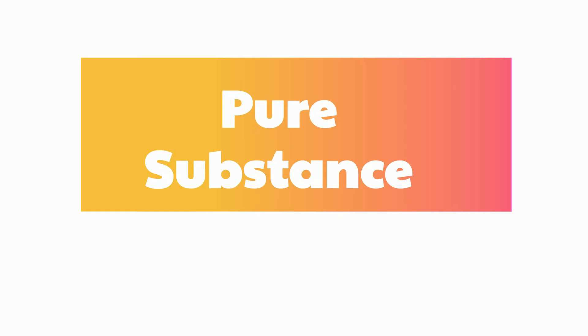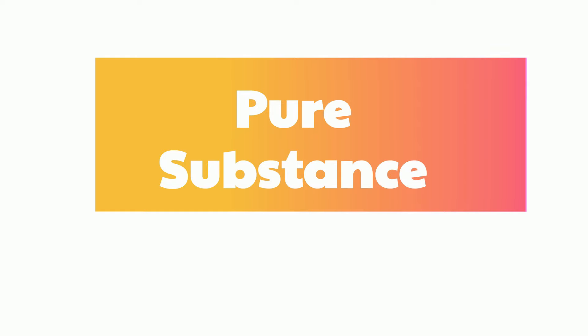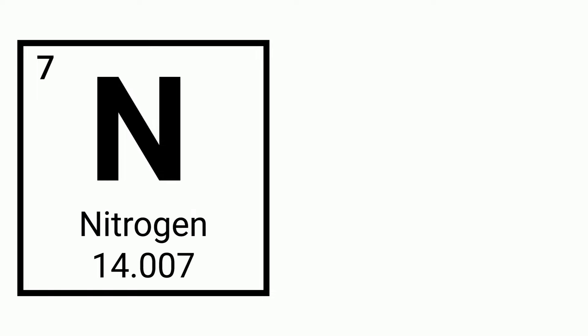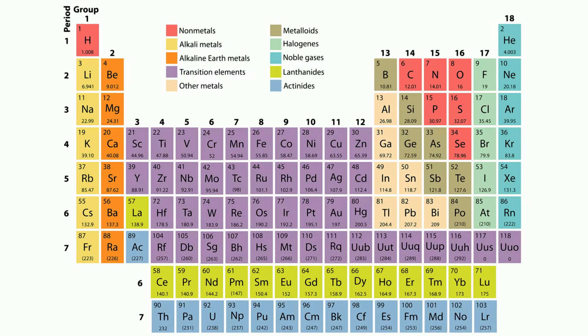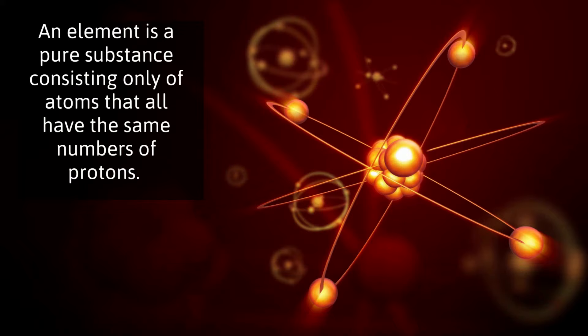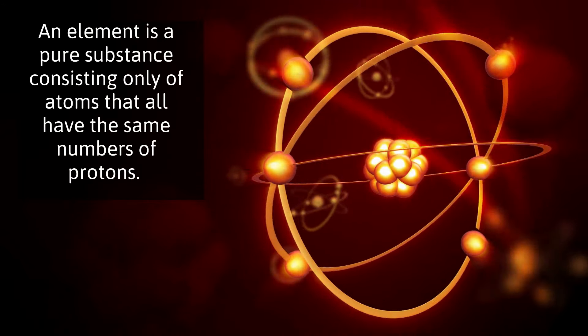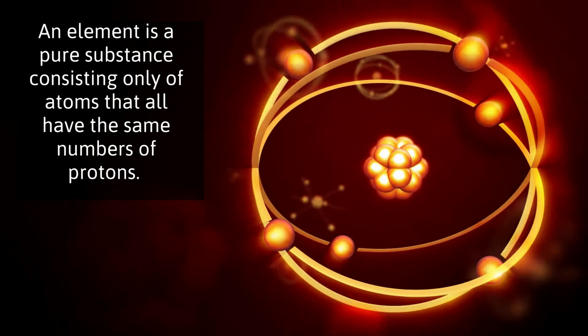A pure substance is either an element or a compound. All of the elements found on the periodic table are pure substances. They cannot be chemically separated.